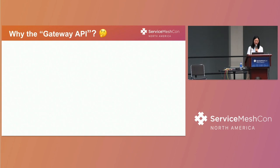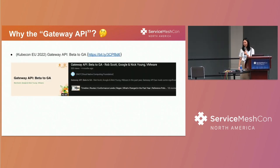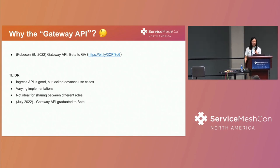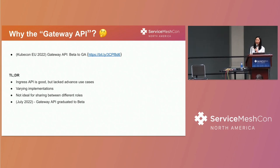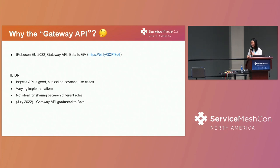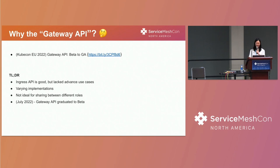To set some context — why the Gateway API? There's a good talk that goes more in depth about this, and I highly recommend you tune into that later. But the TLDR is that the Ingress API was good — it's a core, stable API that comes out of the box with Kubernetes — but it lacked advanced use cases for people who want to implement Ingress controllers. This led to bloated annotations, it was hard to port over different implementations, and it wasn't ideal for sharing between roles. We had everyone in the same kitchen touching the same resource, which was not a smooth experience. So the Gateway API was introduced to be a superset of the Ingress API, and as of July 2022, the Gateway API graduated to beta, which is really exciting.